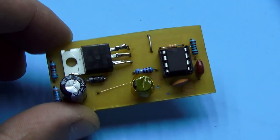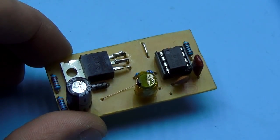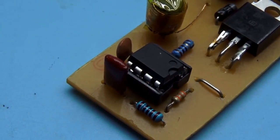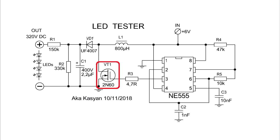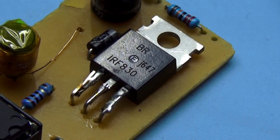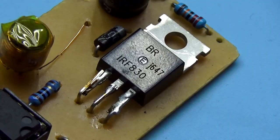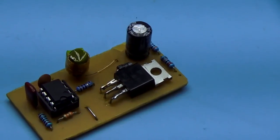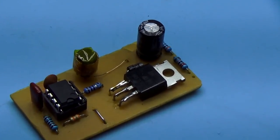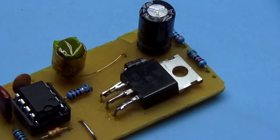About components of the circuit. With the timer 555, I think there will be no problems. A standard circuit is used. The field-effect transistor must be high voltage N-channel. I have an IRF830 on the board, but I advise 2N60 or 4N60 transistors. They have more voltage reserve.